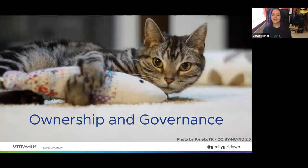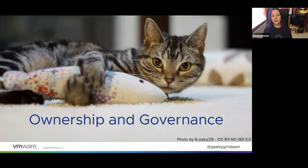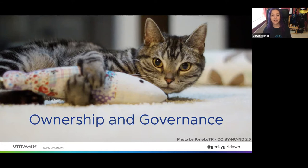I wanted to start by talking about why it is so important to think about who owns or controls an open source project, because it's something that many of us don't spend as much time thinking about as we should. The project's governance documents can help you learn more about the ownership and control of a project. From a risk perspective, you should be looking for projects with neutral governance, where decisions are made by people from a variety of different companies. Projects controlled by foundations and those owned by an individual company can have very different dynamics and risks.